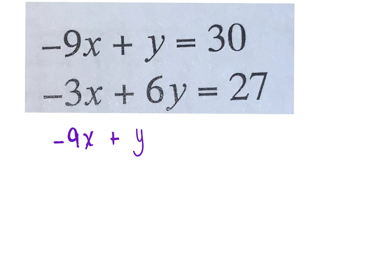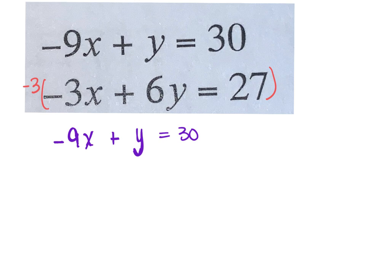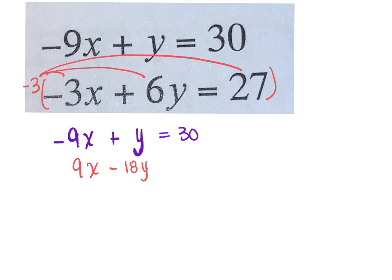I'm going to rewrite this first group and leave it alone because I'm not actually going to change anything with it. For the second group, I'm personally trying to eliminate my x's. So I am going to multiply the second group by negative 3 — negative 3 because I need a positive 9 there for my x's to cancel. If you did y's, then you should have multiplied everything by negative 6. So it just depends on which variable you chose. Negative 3 times negative 3, negative 3 times positive 6, and negative 3 times positive 27.